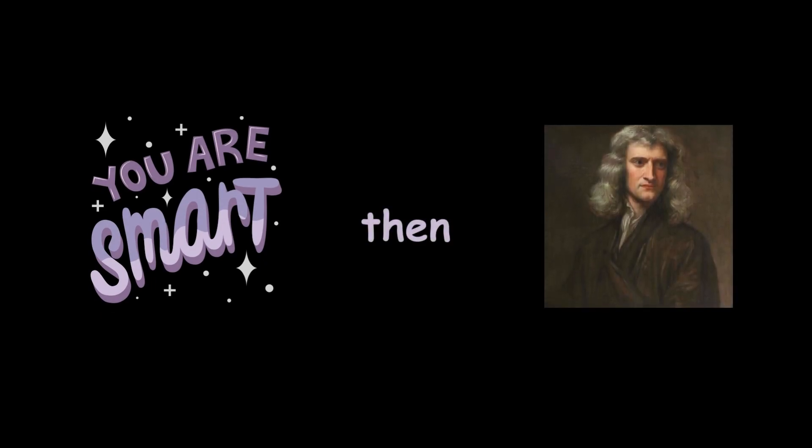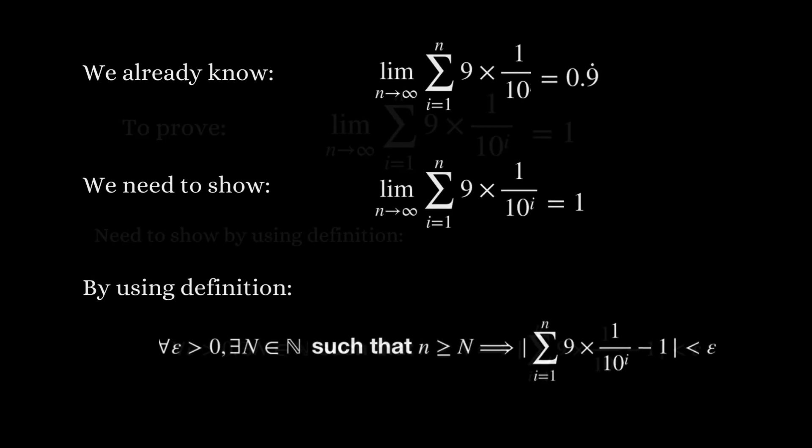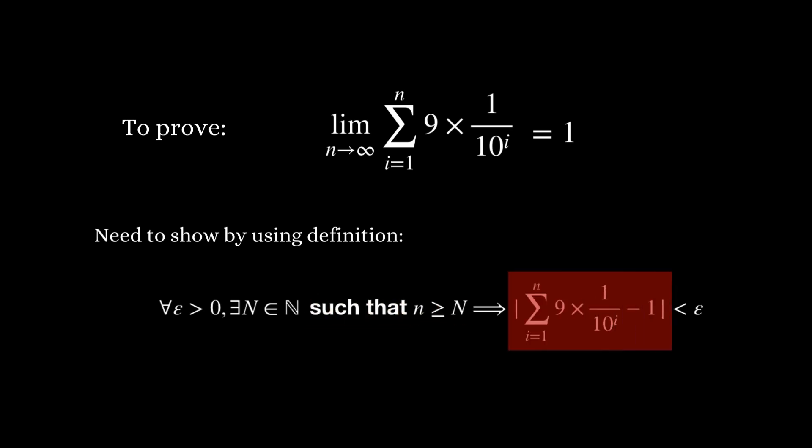Now let's dive into the proof based solely on the introduced definition of the limit. So follow the definition, we need to show that for any number epsilon greater than 0, we can find a natural number capital N correspondingly, such that for any natural number n greater or equal to this capital N, the absolute difference between 1 and this expression here is less than epsilon.